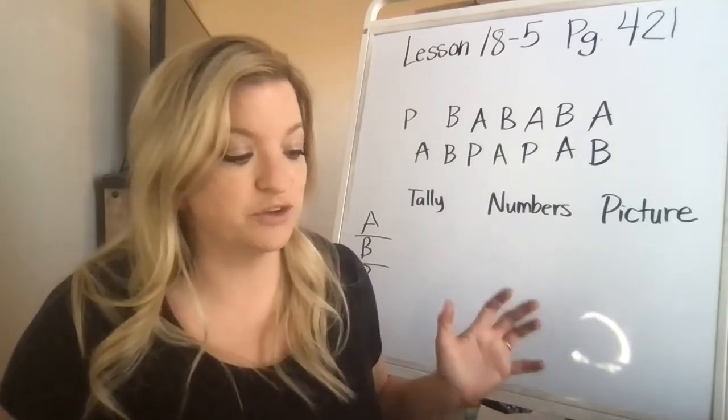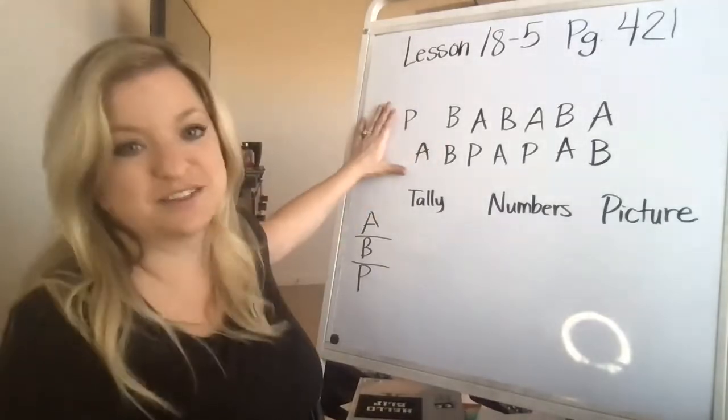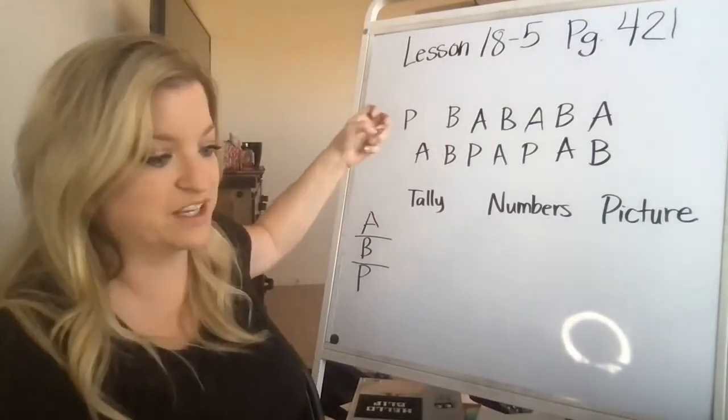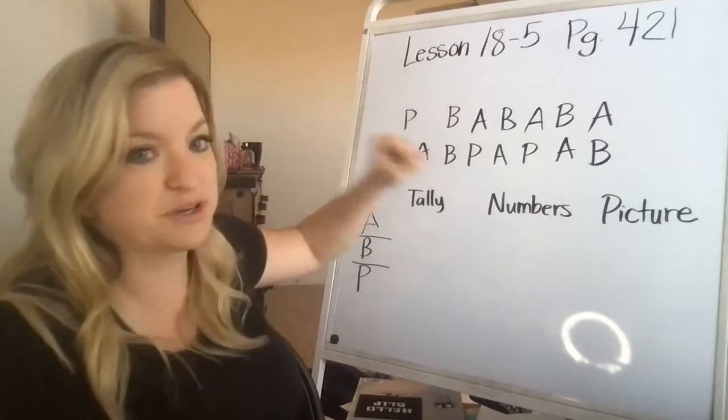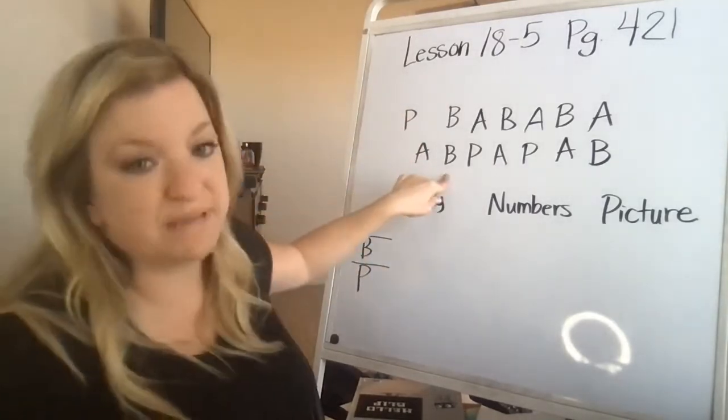So you'll see a bunch of pears and apples and bananas. This is what I drew because I couldn't draw apples and pears and bananas. So the P is for pears, A is for apples, B is for bananas.